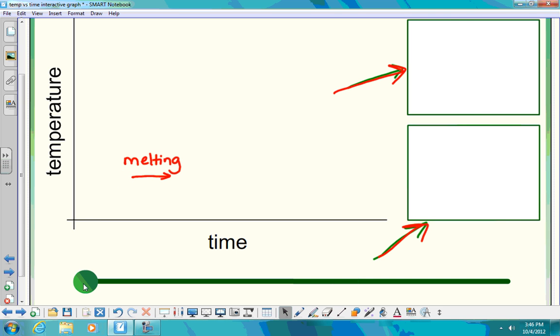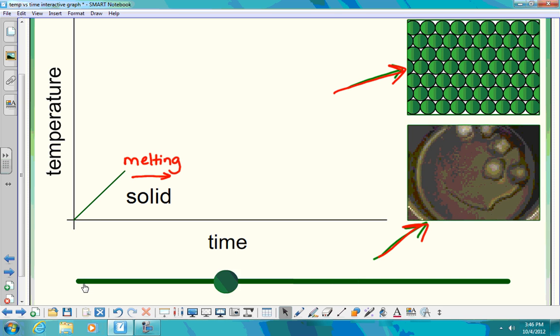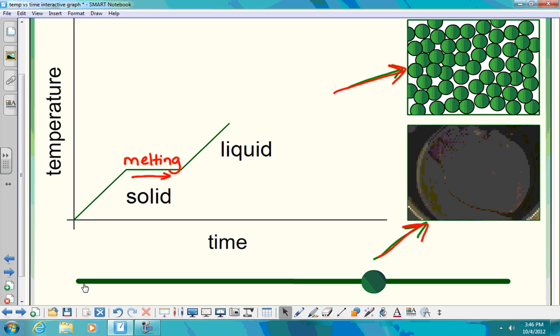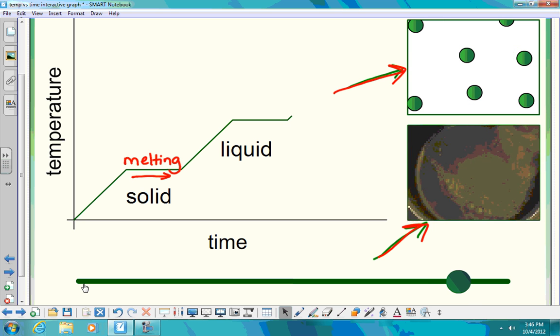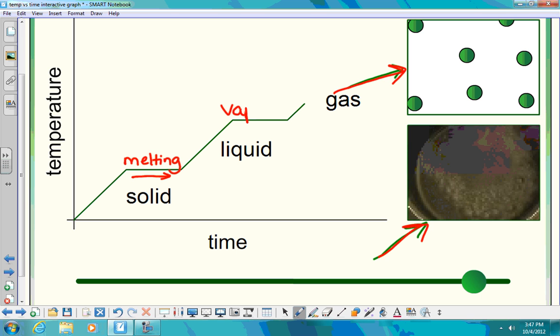As we continue over time, what's going to start to happen is that the liquid is going to start moving extremely fast and spread far apart and become our gas. So this is going to be your vaporization or boiling or evaporation. This is your vaporization; in the picture we saw boiling occurring.